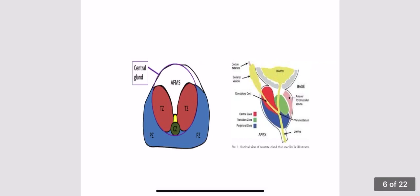This is a transverse and longitudinal section of the prostate showing the zones. Anatomically, the prostate is formed from the peripheral zone, transitional zone, and central zone. As known from the previous lecture, benign prostatic hyperplasia (BPH) occurs exclusively in the transitional zone, while carcinoma of the prostate occurs 70 percent in the peripheral zone, 20 percent in the transitional zone, and only 10 percent in the central zone.